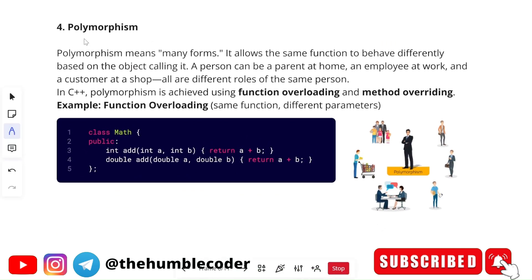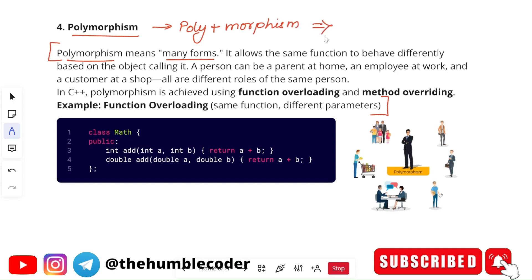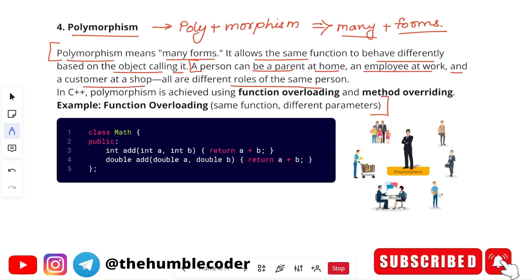The next pillar is polymorphism. The word polymorphism is made from two words: poly plus morphism, where poly stands for many and morphism stands for forms. So polymorphism means many forms. It allows the same function to behave differently based on the object calling it. A real life example: a person can be a parent at home, an employee at work, and a customer at a shop — all different roles of the same person. In C++, polymorphism is achieved using function overloading and method overriding.